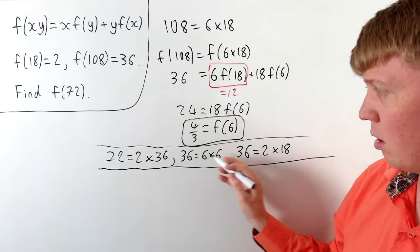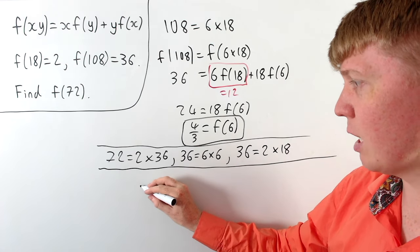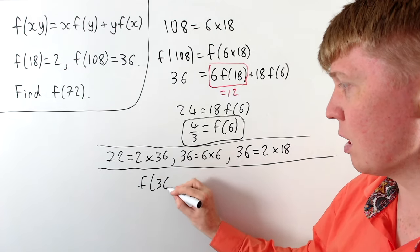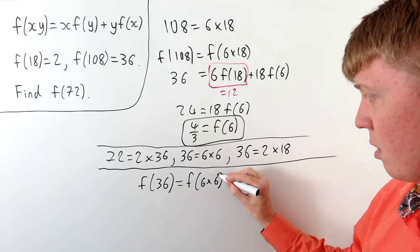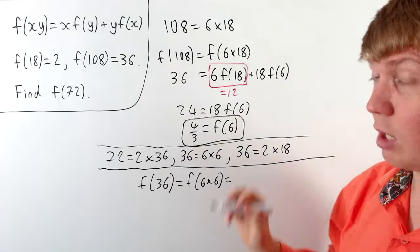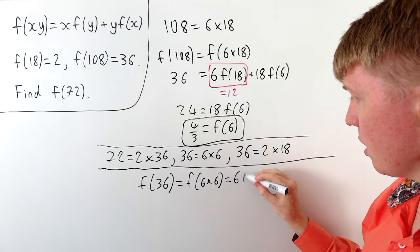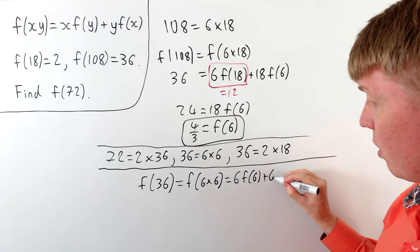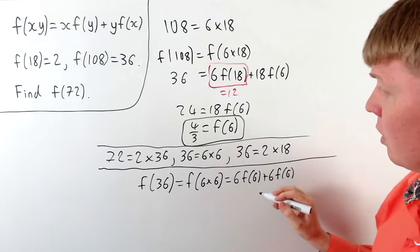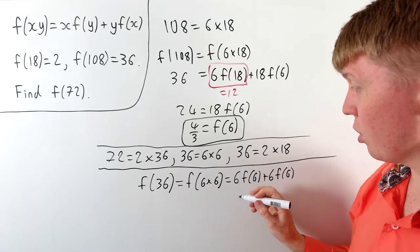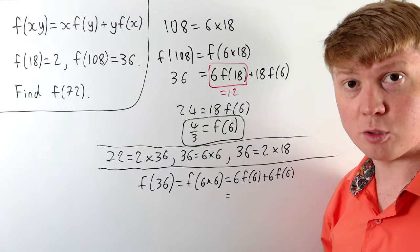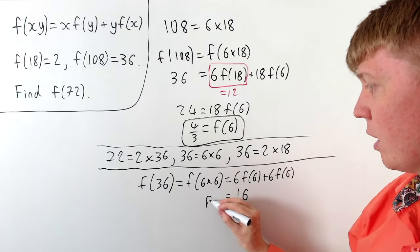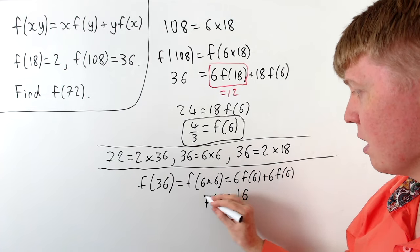So let's now just use this 36 is 6 times 6 to find the value of f of 36. So f of 36 is f of 6 times 6. Then using the functional equation x and y are both 6, we've got 6 f of 6 plus another 6 times f of 6. And we know that f of 6 is 4 thirds. We've got 12 lots of 4 thirds and 4 thirds of 12 gives us 16 as our value for f of 36.